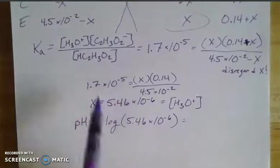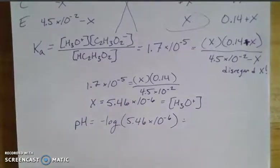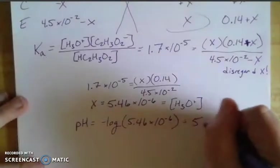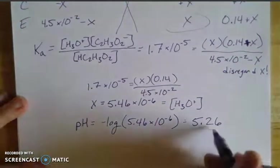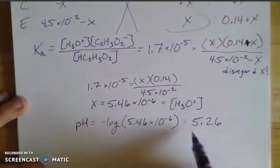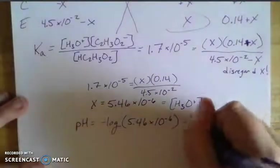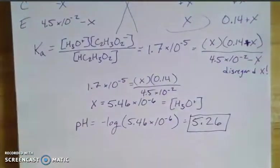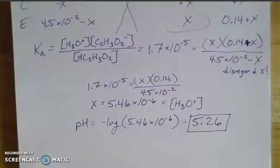And when we plug that in, and again, at the end here, we're going to be limited to two significant figures, then we end up with a pH of 5.26, with two significant figures being the ones that are after the decimal place here. So this is a pH value with two sig figs. And that answers the question of what is the pH of my buffering solution.